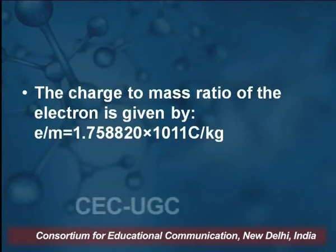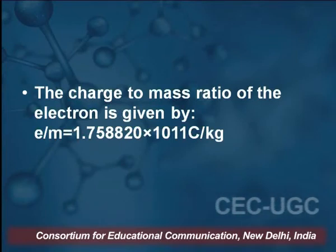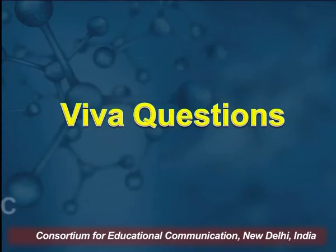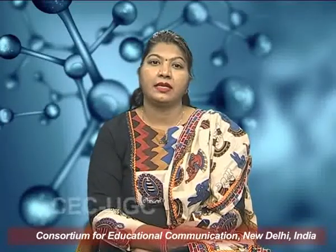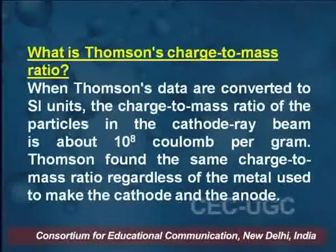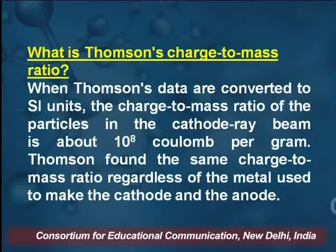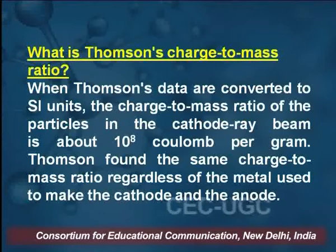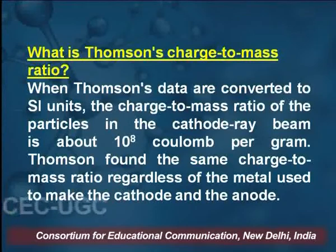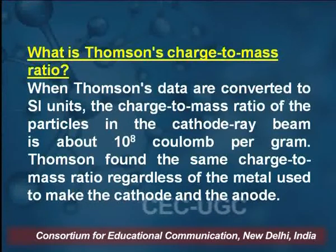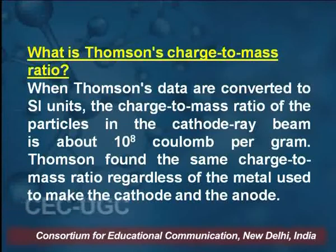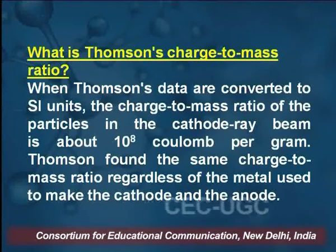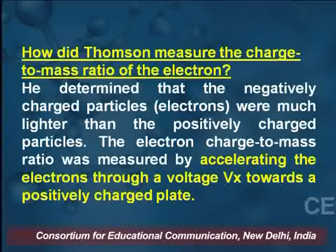The charge-mass ratio is defined as the electron charge-mass ratio. Some viva questions will be asked in this experiment. What is the Thomson charge-mass ratio? When Thompson's data was converted into SI units, the charge-to-mass ratio of particles in the cathode ray beam is about 10⁸ coulombs per gram. Thomson found the same charge-to-mass ratio regardless of the metal used to make the cathode and anode.